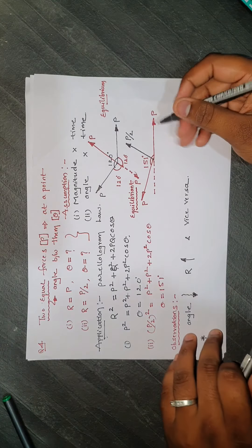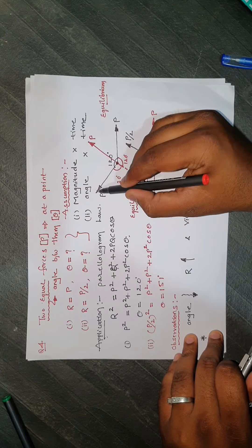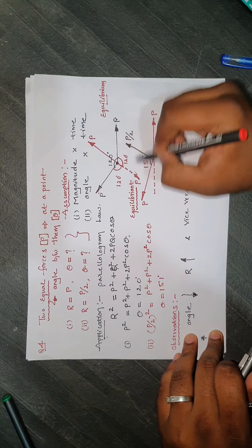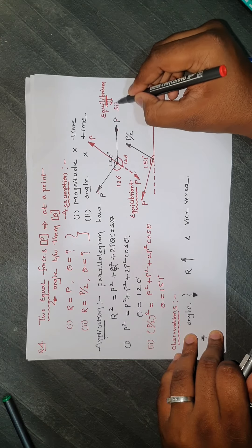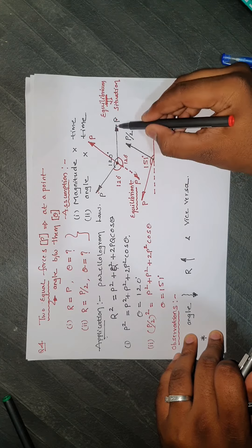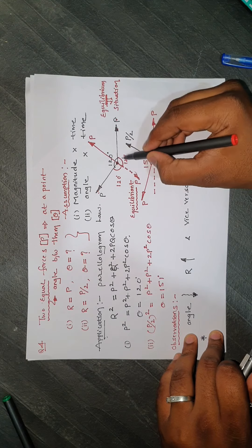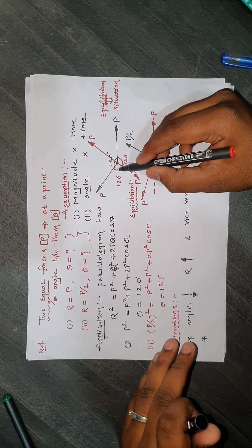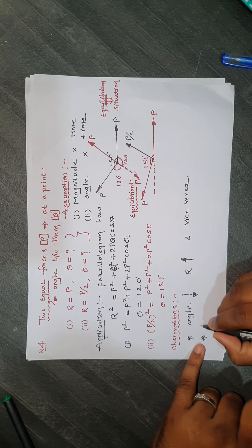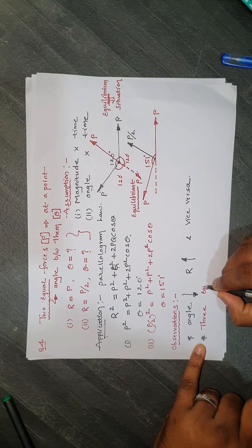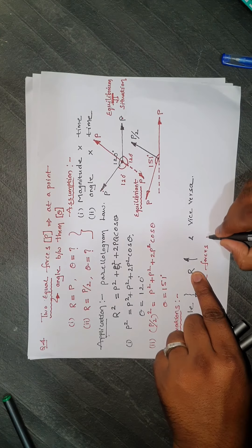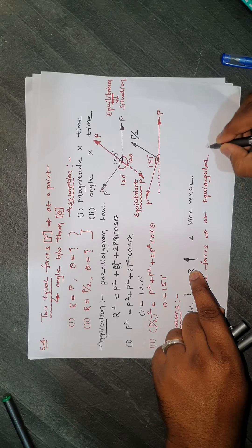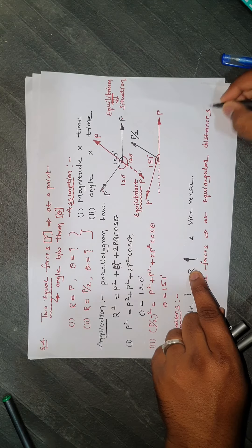One more question you may encounter: if three equal forces are separated by equi-angular distances, they will produce an equilibrium situation. Three equal forces must be separated by 120 degrees, 120 degrees, and 120 degrees — three equal forces at equi-angular distances make an equilibrium situation.